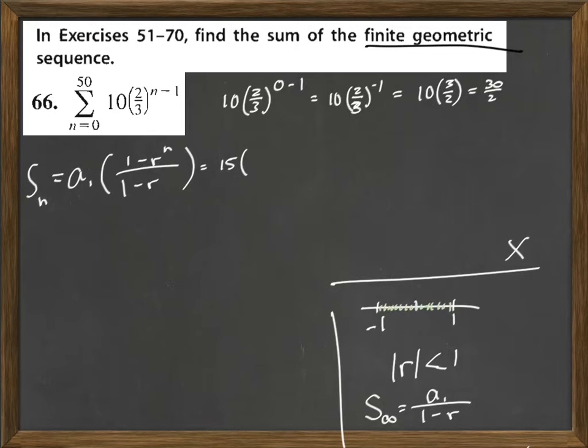And then we multiply this times 1 minus r raised to the n. Now in this case, we have 51 terms divided by 1 minus r. Our r is 2 over 3.